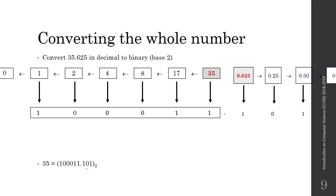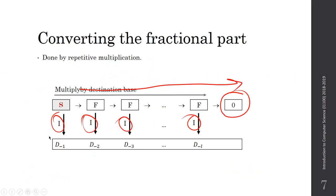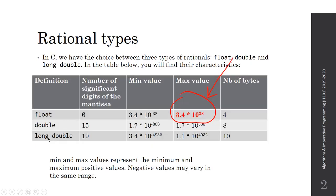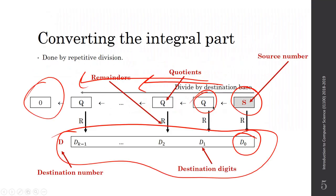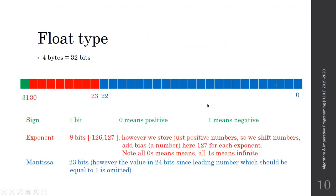Putting these together, the number 35.625 in decimal has a corresponding binary representation. On the PC, a float needs 4 bytes — that is 32 bits. How does the PC subdivide these 32 bits? There is 1 bit for the sign: 0 means positive, 1 means negative.